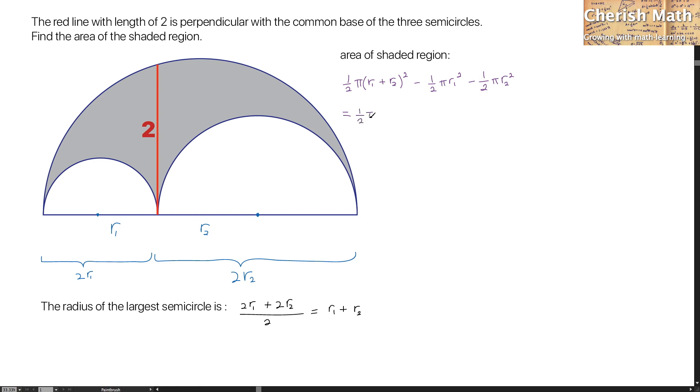That would be 1/2 pi R1 squared plus 2 multiplied by R1 R2 plus R2 squared. In the next step, I'm going to simplify the equation.